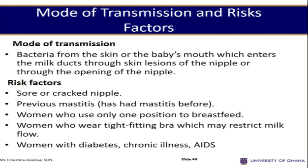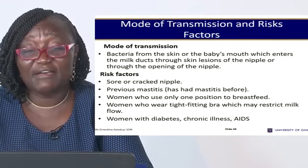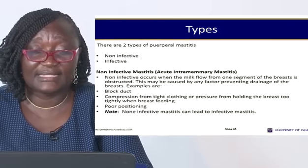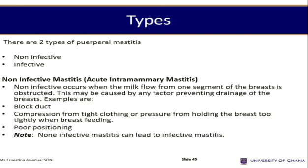Risk factors for mastitis include cracked nipples, which provide an entry point for microorganisms. A previous history of mastitis, wearing tight-fitting bras that restrict milk flow, and diabetes are all risk factors. There are two types: non-infective mastitis, caused by obstruction of milk flow from a segment of the breast, and infective mastitis, caused by a bacterial organism entering through a cracked nipple.